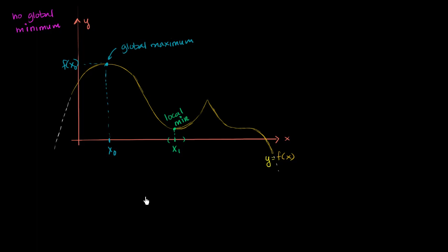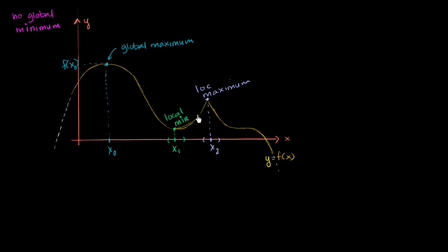Do we have any other local minima? It doesn't look like we do. What about local maxima? This point right over here looks like a local maximum — local maximum right over there. We could say at the point x₂, we have a local maximum point because f(x₂) is larger than f(x) for any x in a neighborhood around x₂. So we've identified all of the maxima and minima, often called the extrema, for this function.